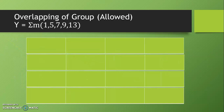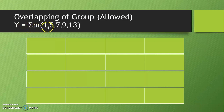Then we have overlapping of groups — overlapping is allowed. Suppose we write one boolean function that is y is equal to summation m(1, 5, 7, 9, 13).